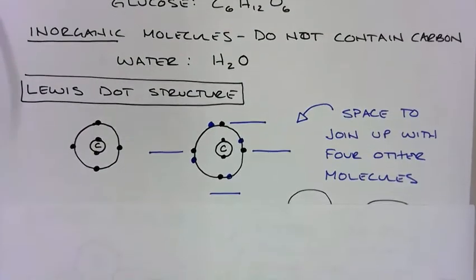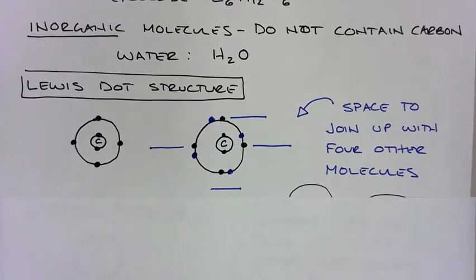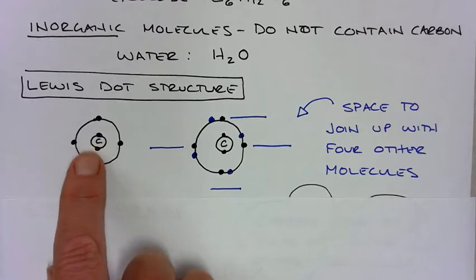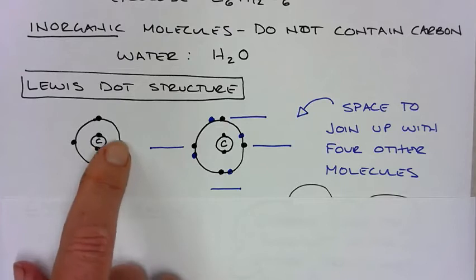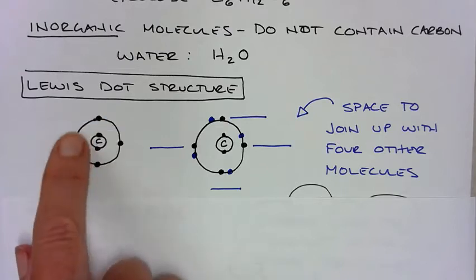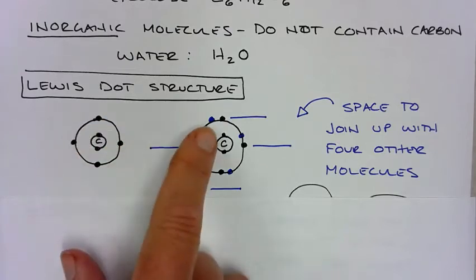Let's look at the structure of carbon. This is a Lewis dot structure. Carbon on the inner orbital has room for only two electrons, and then on the outside it has four electrons. However, it does have room for a total of eight, so it has the opportunity to join up with four other electrons.